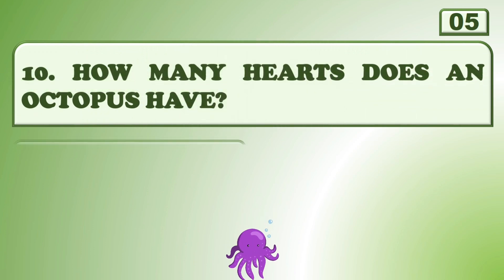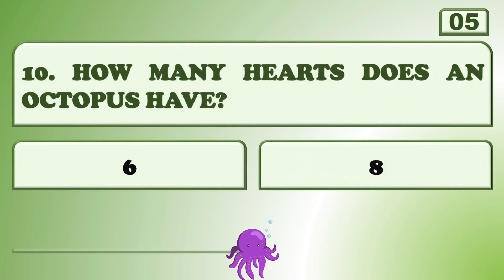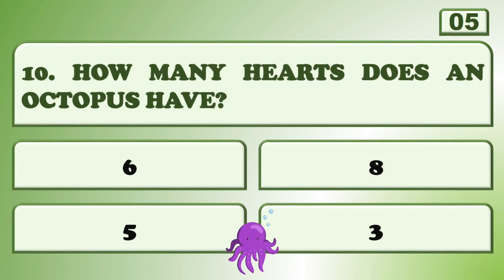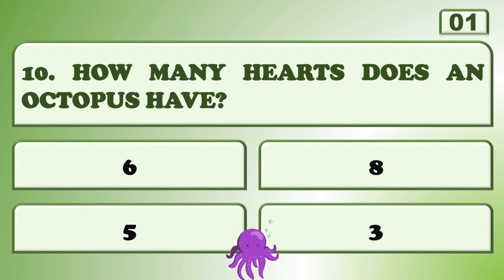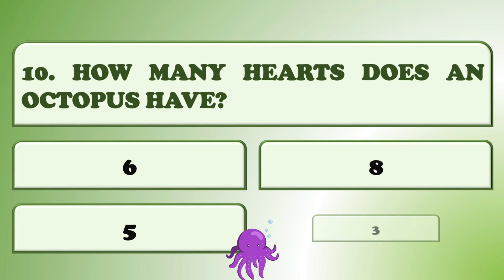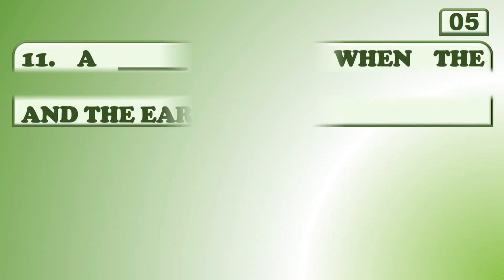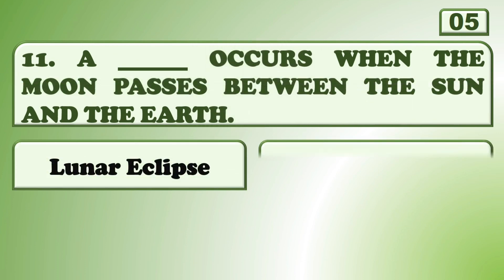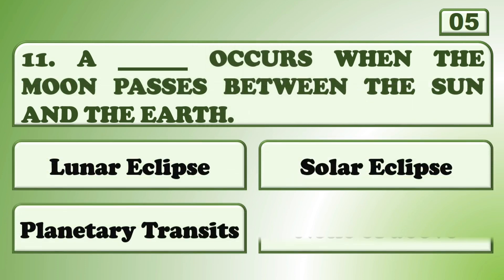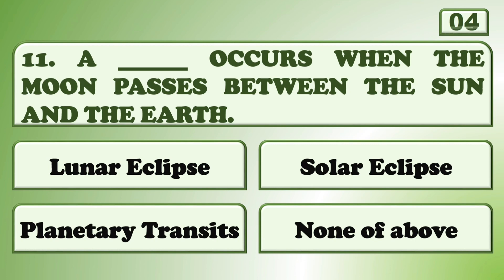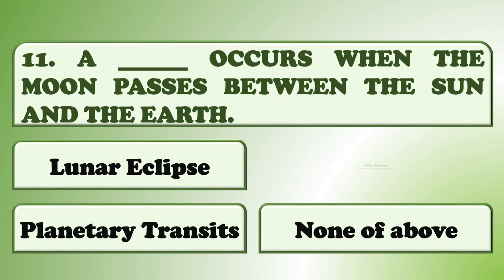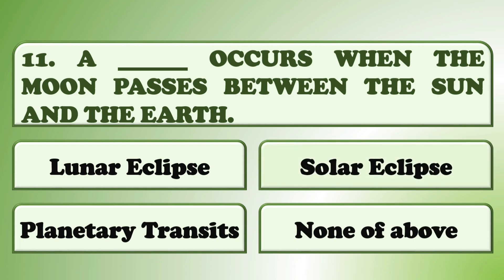How many hearts does an octopus have? A solar eclipse occurs when the moon passes between the sun and the earth. Solar eclipse!